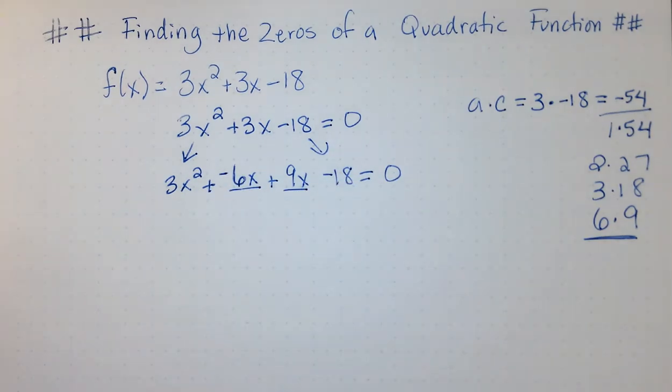Many students ask me, does it matter the order of these two numbers in the blanks? Could I write 9x first and then negative 6x? And the answer to that is yes. You can absolutely put it in any order as long as the sign stays with the appropriate term. So, you would not want to write negative 9x and then positive 6x. You would want to make sure the sign stayed with it. Now that we have four terms on the left side, we want to continue our process of grouping.